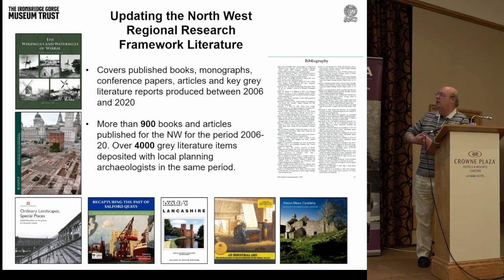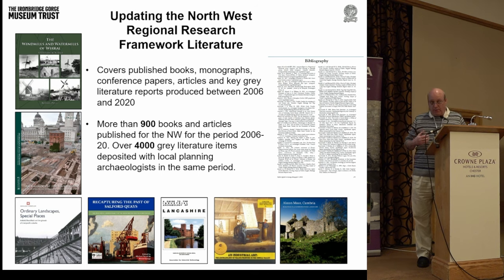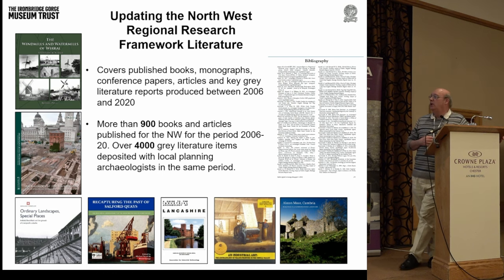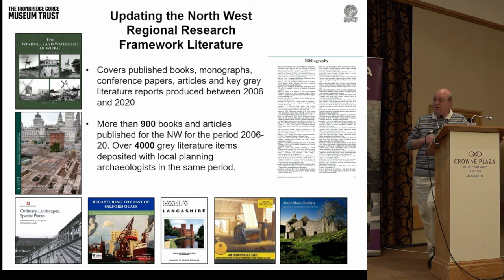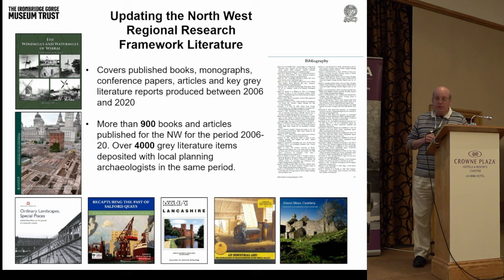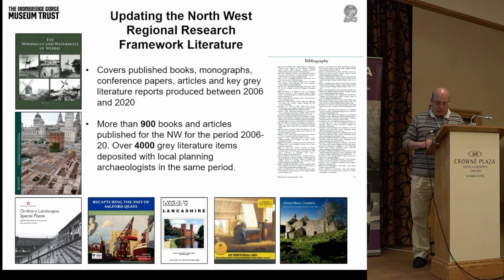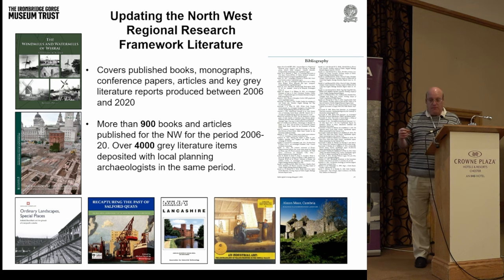We did the first version of the framework in 2005–6 then revised it in 2017–20. By then we had far more material available via the ADS and online via regional HERs and universities. We were able to say there are over 4,000 gray literature reports deposited with local planning authorities across the northwest region between 2006 and 2020, and over 900 books and articles published for the northwest in that period — all periods, not just industrial — which demonstrates the size of the problem we're dealing with.